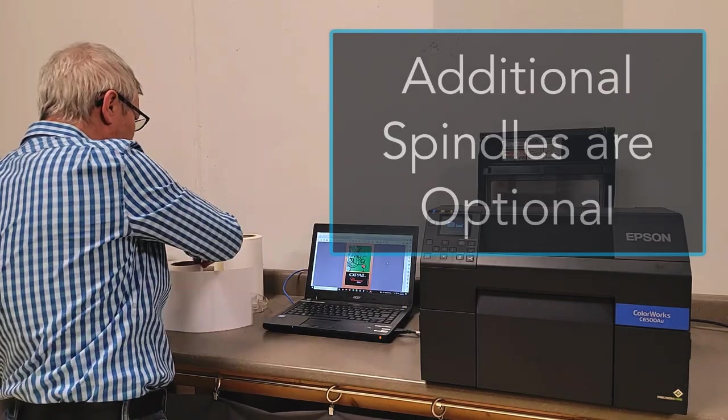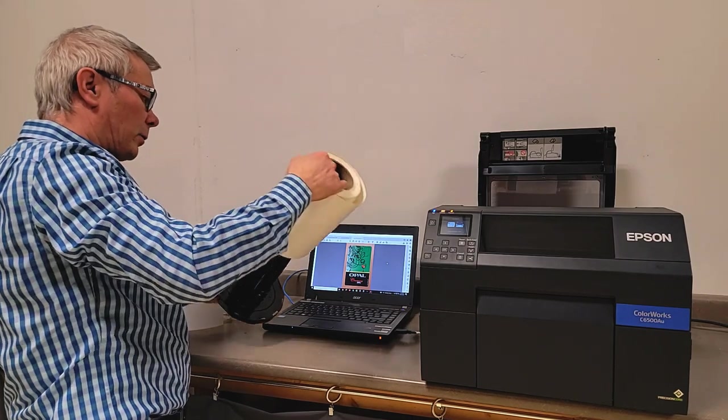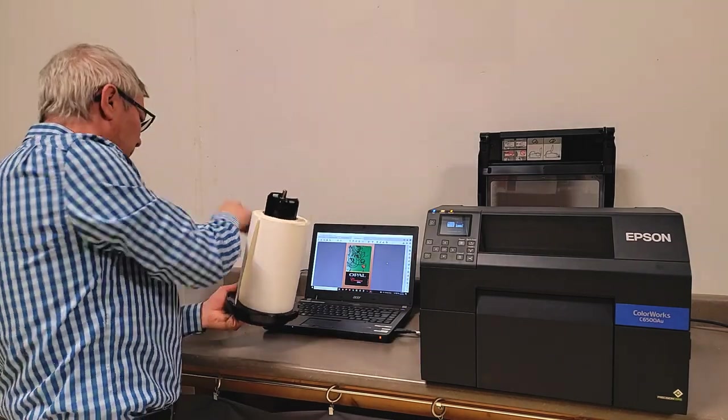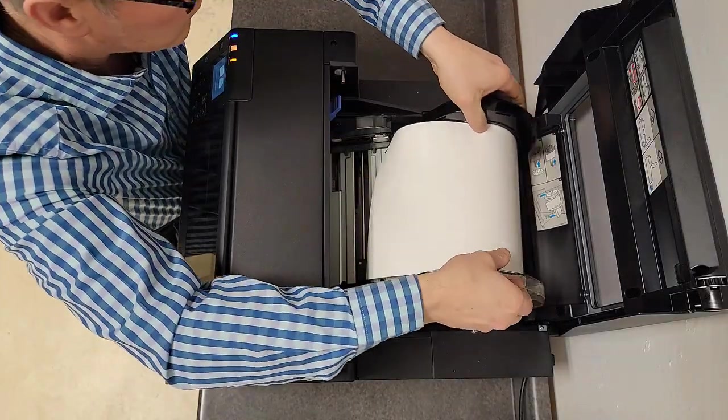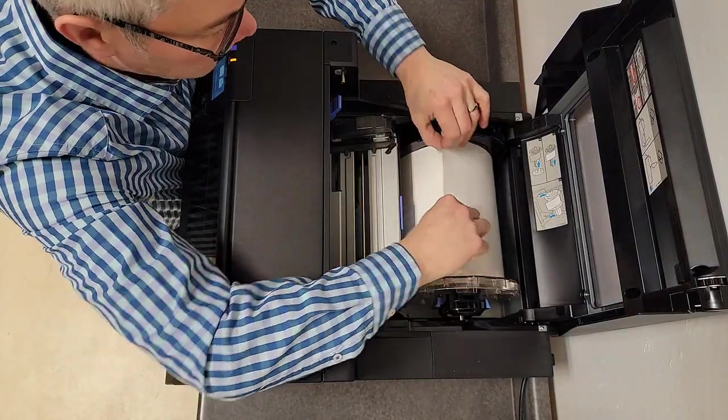Spindle holder comes off. Remove your labels. Install your other label roll. Put the spindle guide back on. And feed it in.